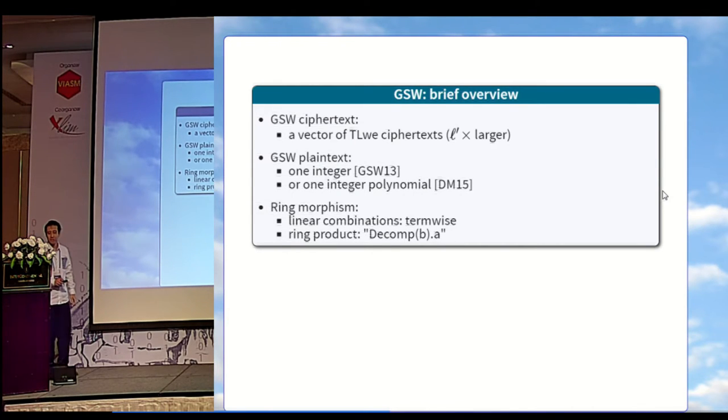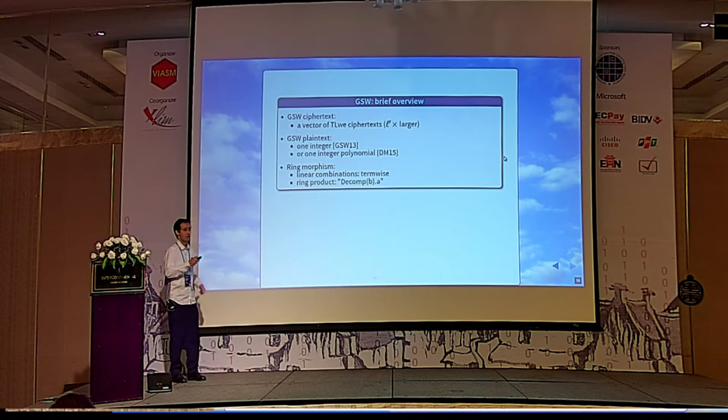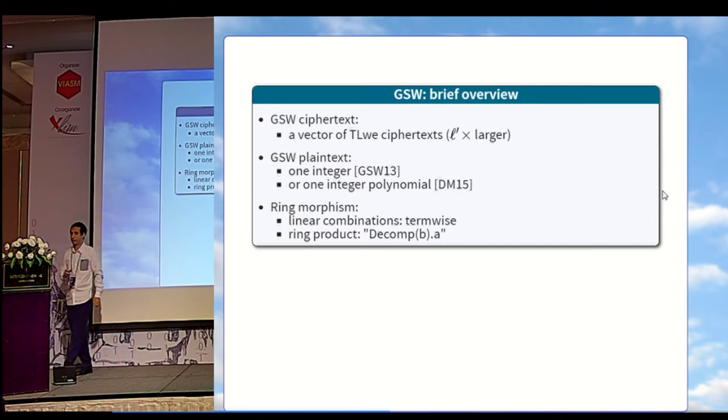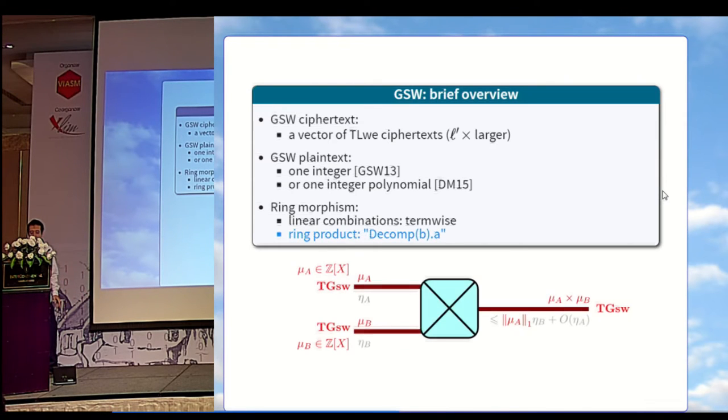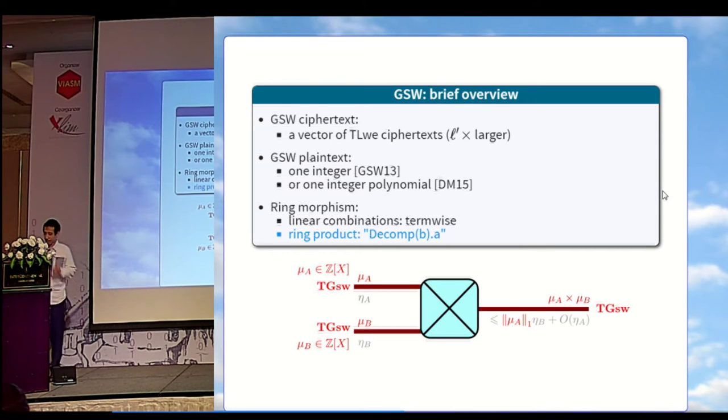In a nutshell, what is GSW? GSW ciphertext is a vector of LWE ciphertext, meaning that it is L times larger. A GSW plaintext encodes just one integer in most variants, or one integer polynomial in the ring variant of Ducca-Mitiancio last year. Now, there is a ring morphism, so addition is always performed term-wise, but most interestingly, there is a ring product formula. From a higher perspective, you take as input two GSW ciphertext, including mu A and mu B, which are integer, and you have a formula that will compute the GSW ciphertext of the internal product of the two plaintexts. You can note that the noise in output follows some asymmetric formula where the noise is multiplied by the value of one of the plaintexts.